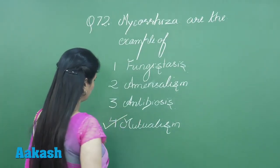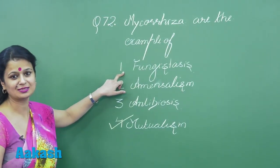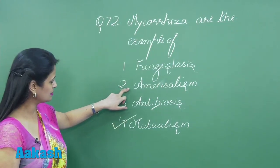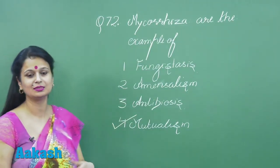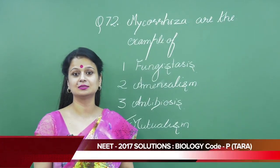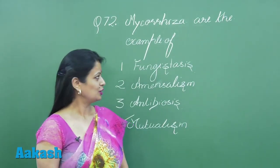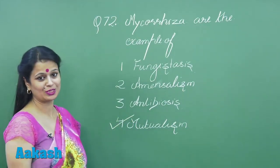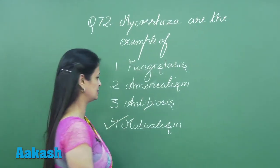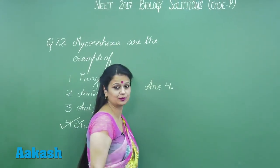Looking at the other options: funistasis refers to inhibition of fungal growth. Amensalism and antibiosis are both types of interactions in which one species secretes certain chemicals that inhibit the growth of another species. So the correct answer for question 72 is option number four, that is symbiosis or mutualism. Now let's move on to question number 73.